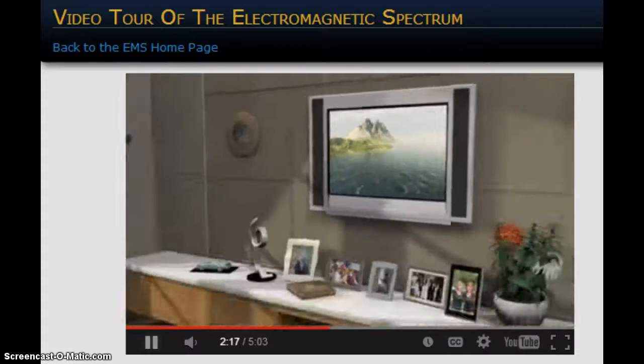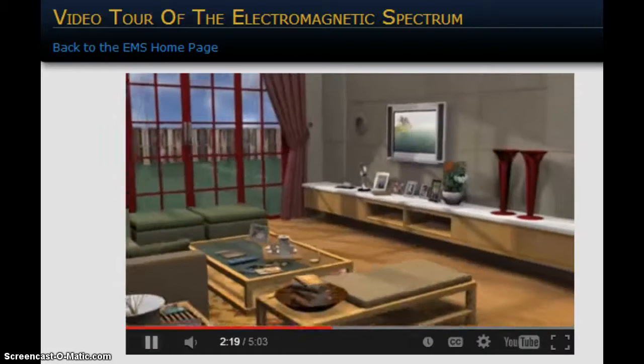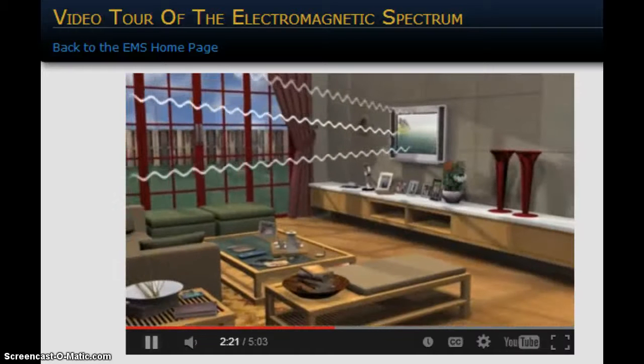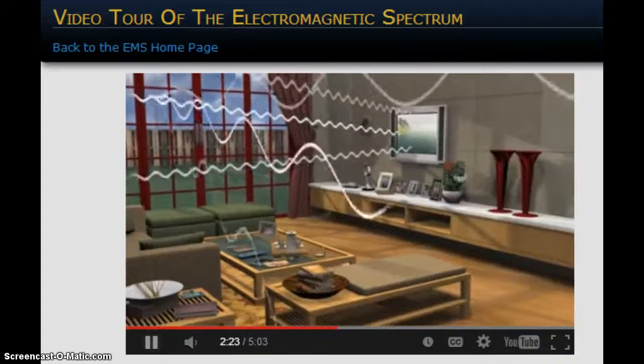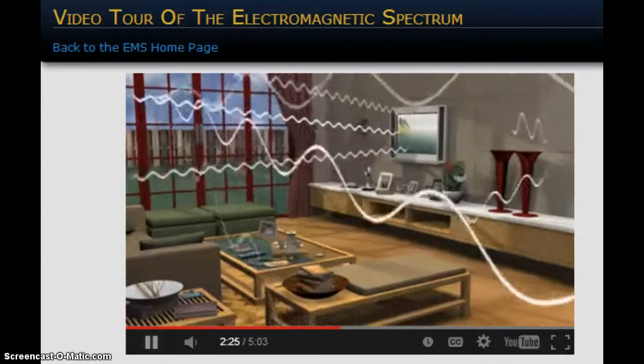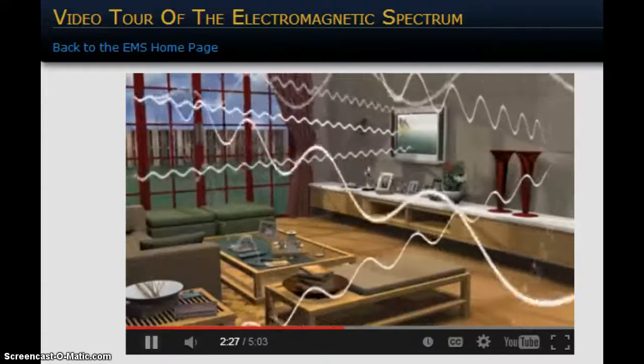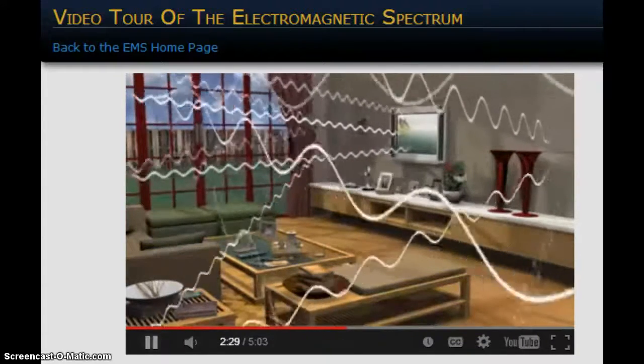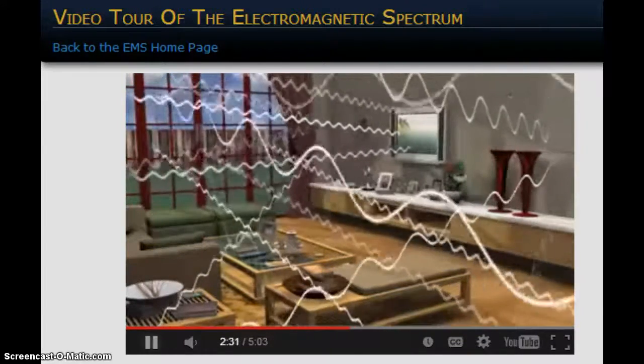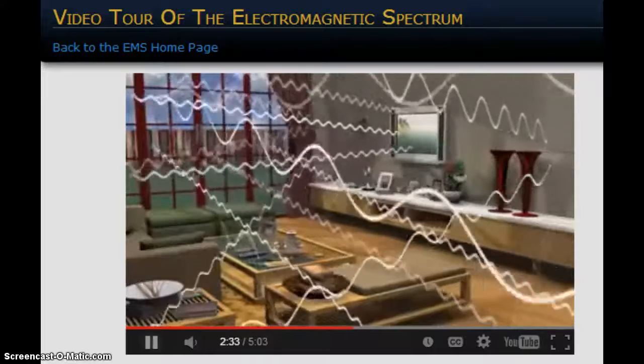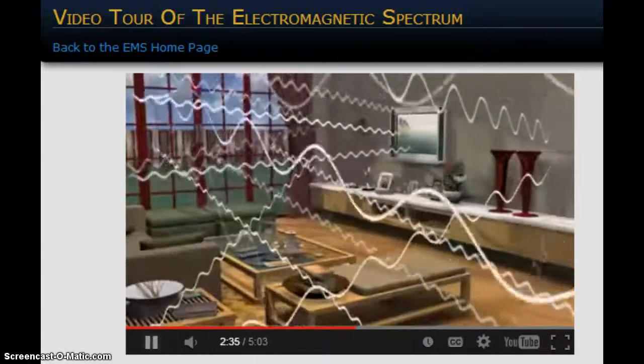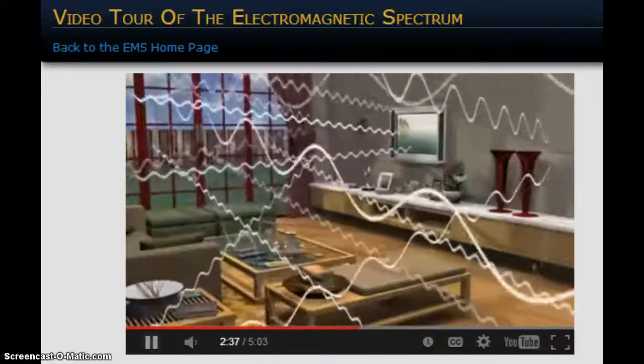So, as you sit watching TV, not only are there visible light waves from the TV striking your eyes, but also radio waves transmitting from a nearby station, and microwaves carrying cell phone calls and text messages, and waves from your neighbor's Wi-Fi, and GPS units in the cars driving by. There is a chaos of waves from all across the spectrum passing through your room right now.